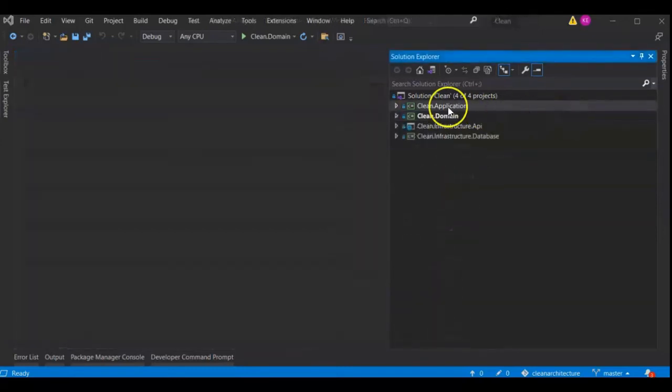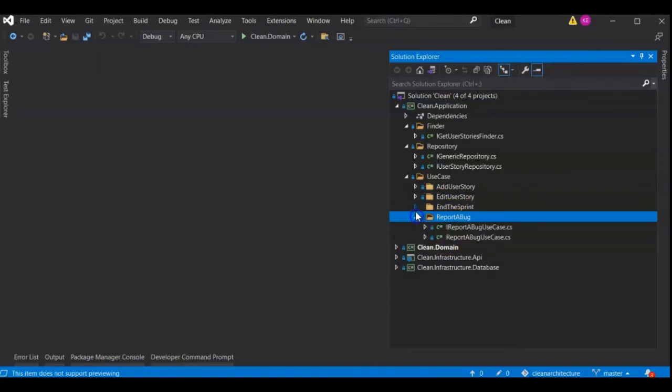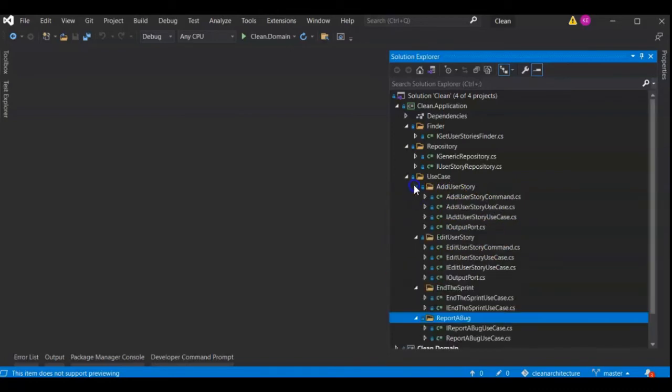The application layer is where I define use cases and other objects that encapsulate business actions. Ideally, your use cases should mimic business transactions like end this sprint or report a bug. Try to make your use cases be about business transactions, not insert, update, delete methods.